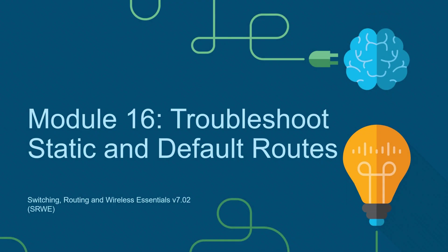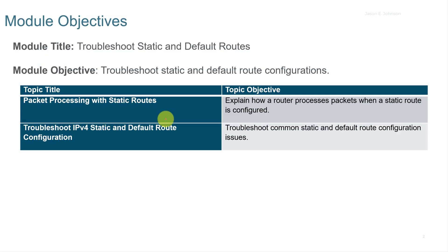This video series is to accompany the Cisco NETACAD Switching, Routing, and Wireless Essentials course. This video is Module 16, Troubleshooting Static and Default Routes. We're going to have two objectives in this video: packet processing with static routes, and troubleshooting IPv4 static and default route configuration.